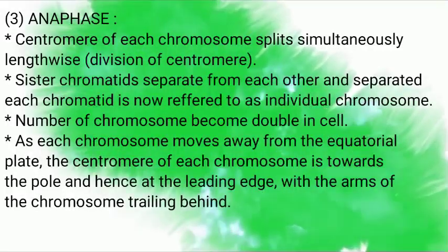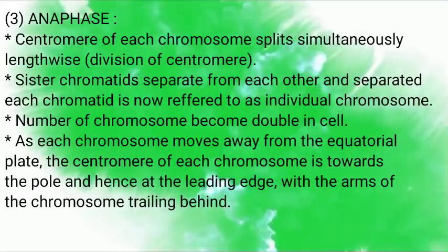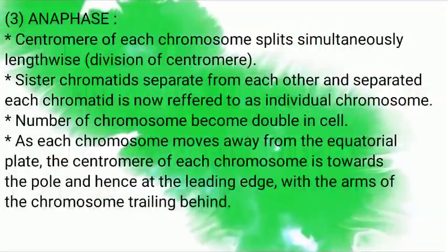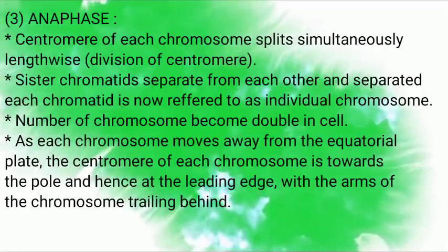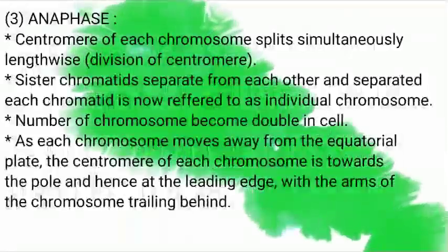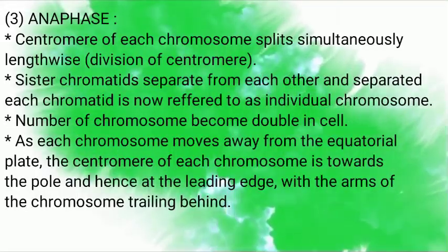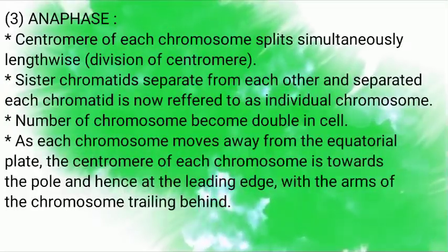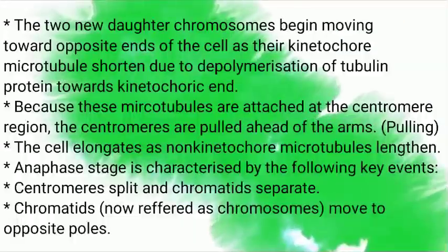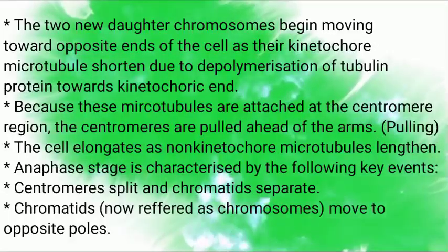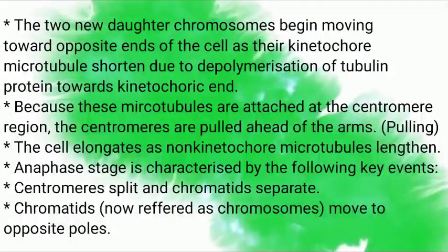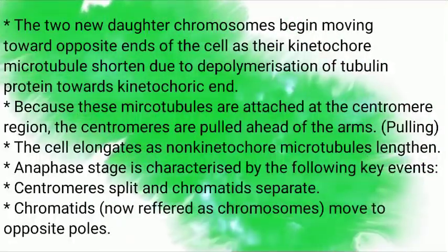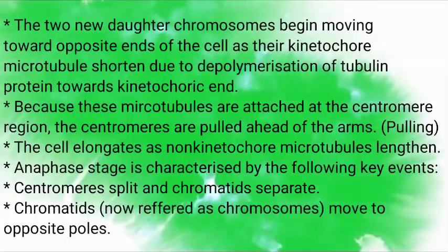Due to centromere splitting, sister chromatids separate from each other and each separated chromatid is now referred to as an individual chromosome or daughter chromosome. Each chromosome moves away from the equatorial plate. The centromere of each chromosome is towards the pole and hence at the leading edge, with the arms of the chromosome trailing behind. The two new daughter chromosomes begin moving toward opposite ends of the cell as their kinetochore microtubules shorten due to depolymerization of tubulin protein towards the kinetochore.